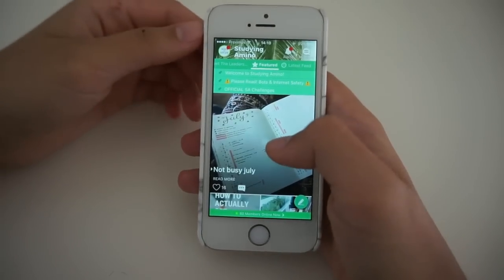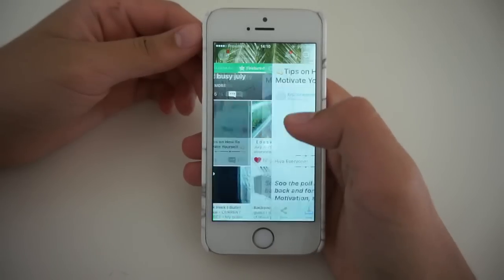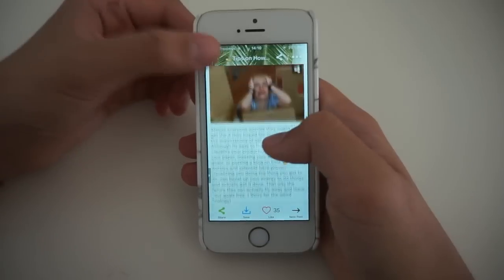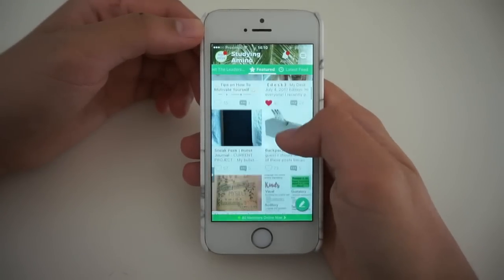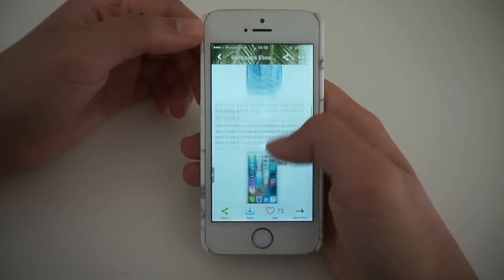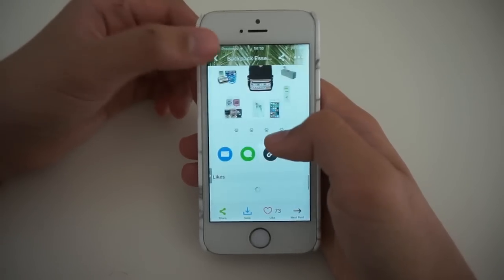My first tip is to join a study group. You can either do this in real life or online with apps like Studying Amino. Studying Amino is an app made for students like you and me. Sometimes it's just really nice to talk to other people about struggles and stressful exams, and on this app you can find people to talk to.